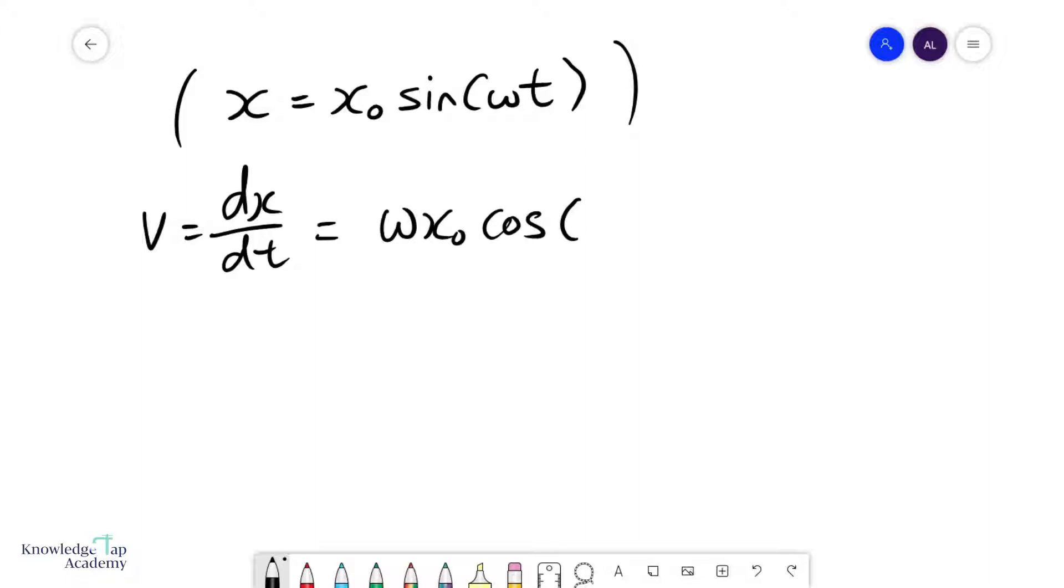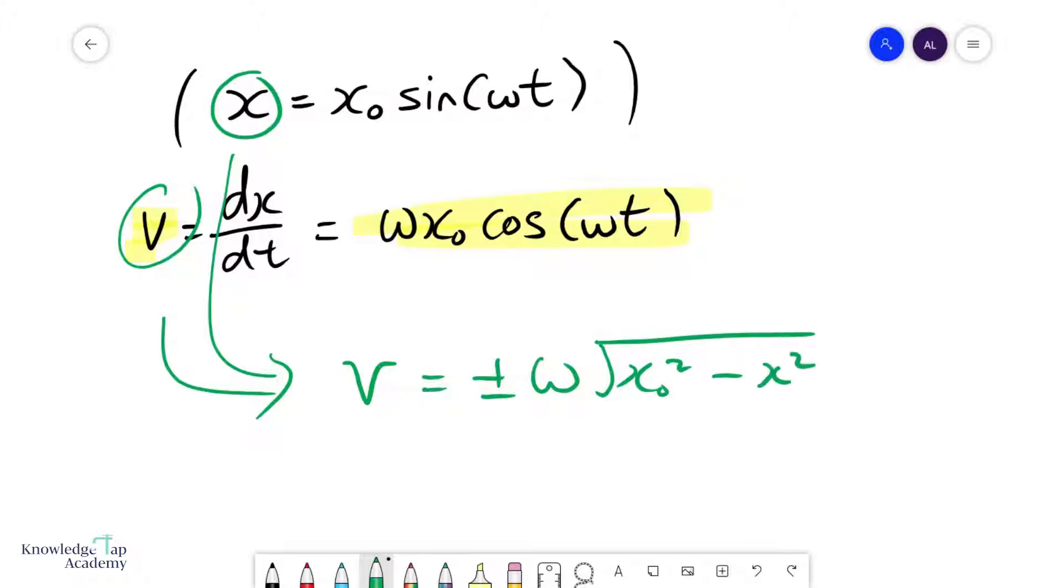Now this formula, it's nice, we don't use this very often, but it turns out that if I combine these two expressions for x and v, I can get a nice mathematical expression that looks something like this: the velocity of an object in SHM equals plus minus omega square root amplitude squared minus x squared. This is a very important relationship between velocity and displacement.